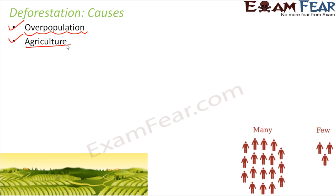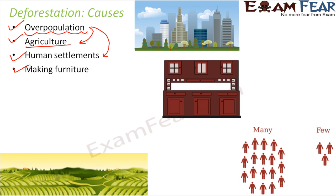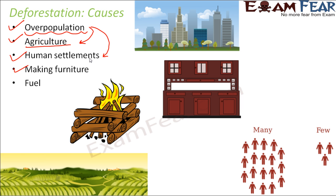Agriculture is another cause — we want to increase crop production to meet the needs of the growing population, so we cut down forests. For human settlements, as the population increases, people need houses, so forests are cleared to build more buildings. Making furniture is also a cause, and cutting down trees for wood as fuel is another form of human-driven deforestation.